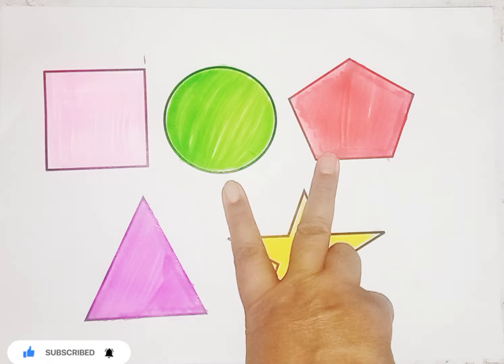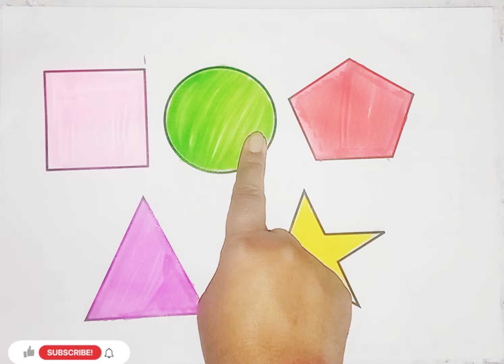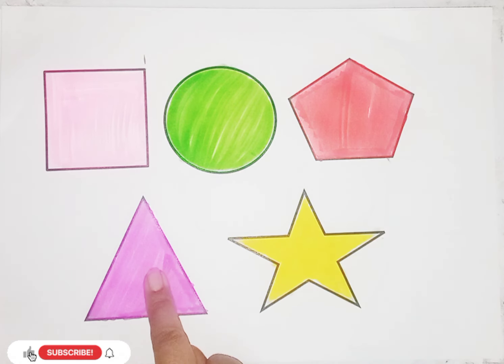So kids, today we learn some 2D shapes: square, circle, pentagon, triangle, star.